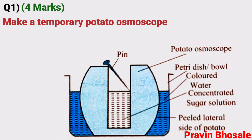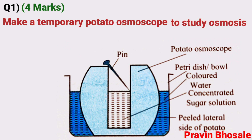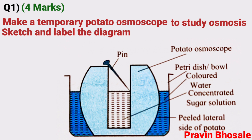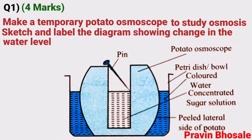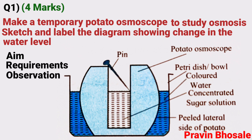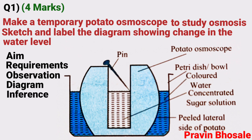First is: make a temporary potato osmoscope to study osmosis. Sketch and label the diagram showing the change in the water level. Here you are writing aim, requirement, observation, diagram, inference.